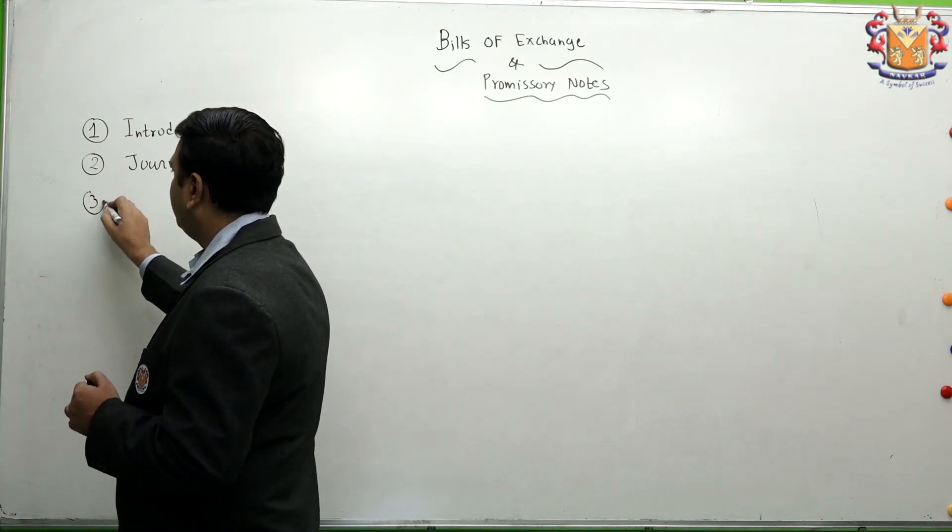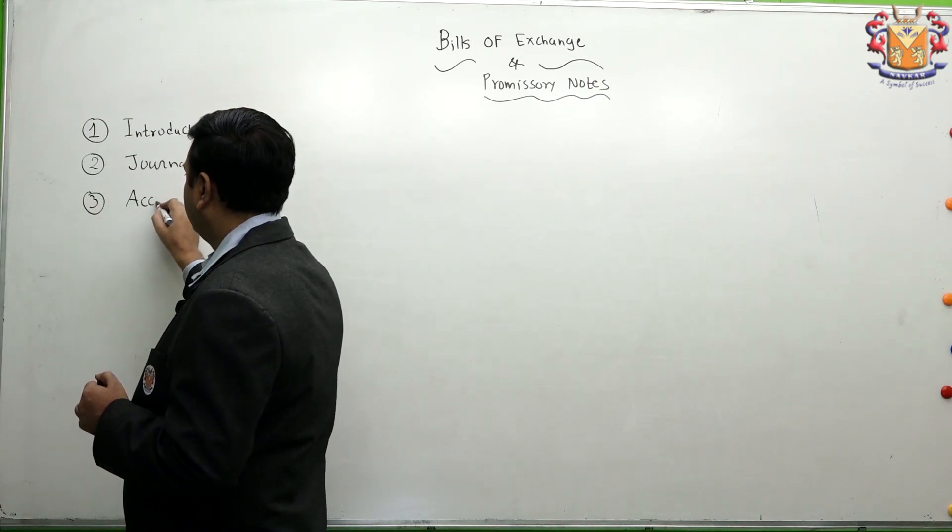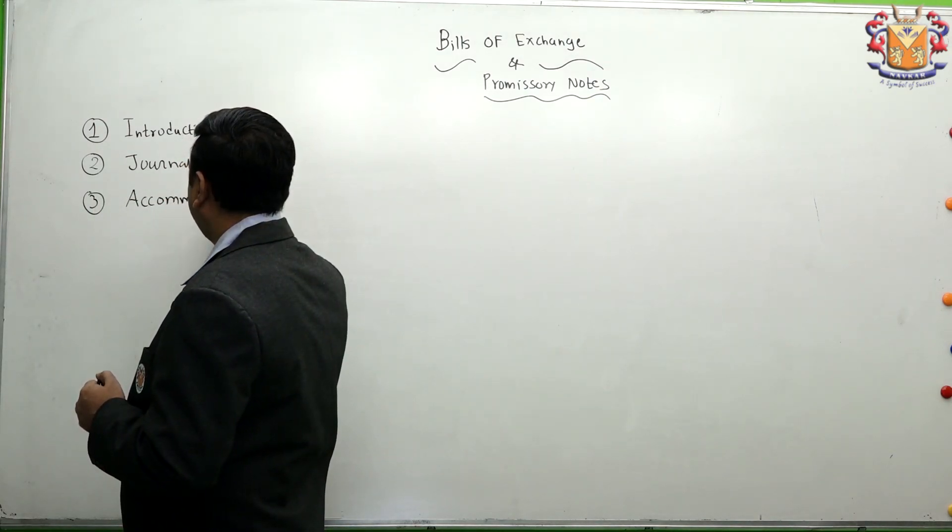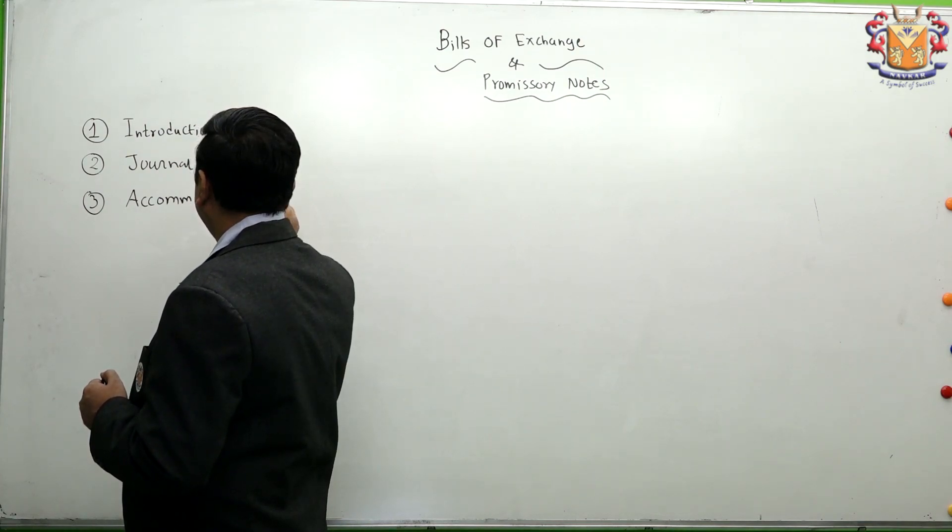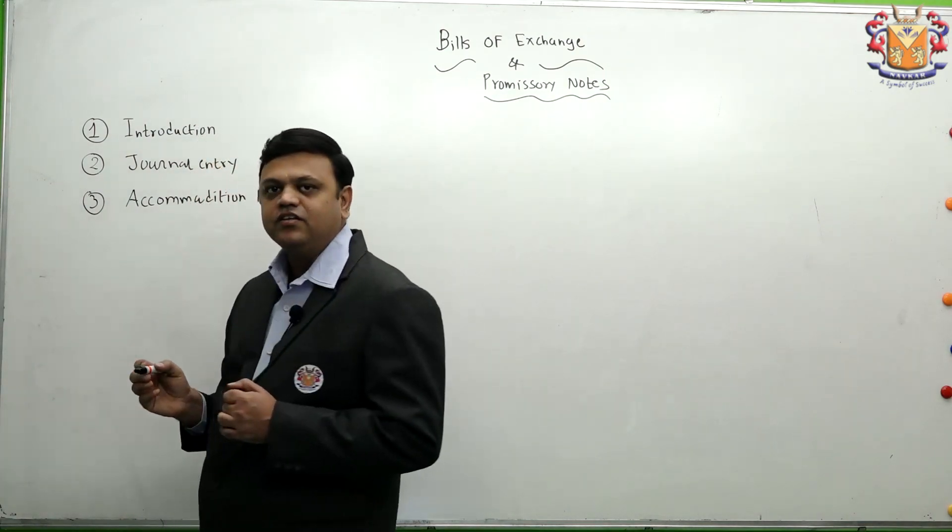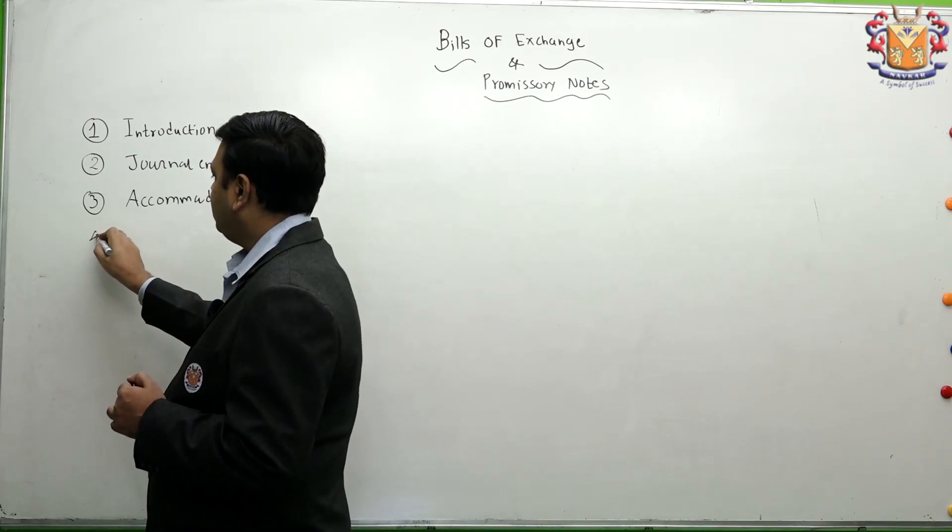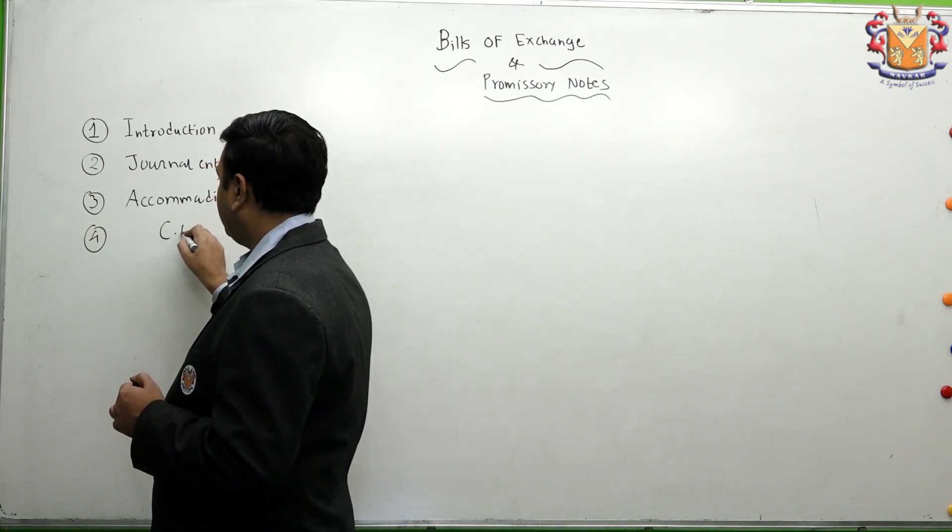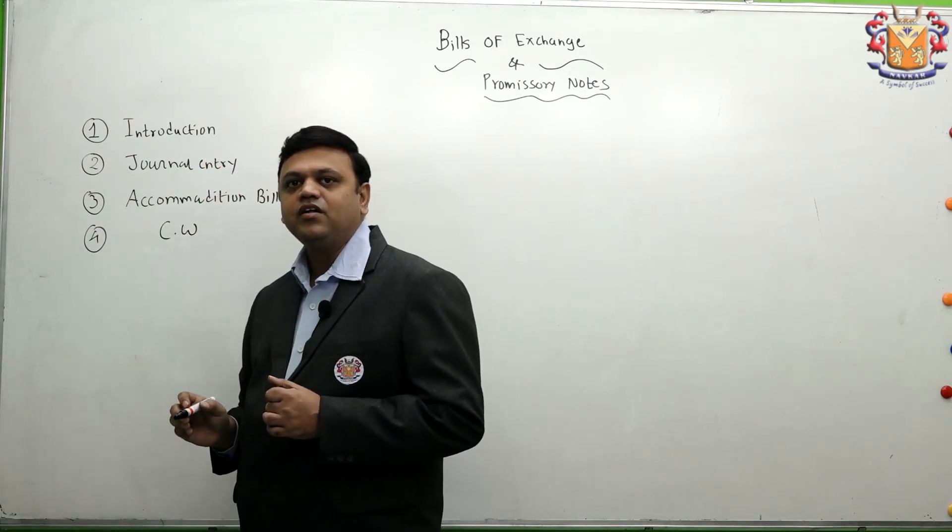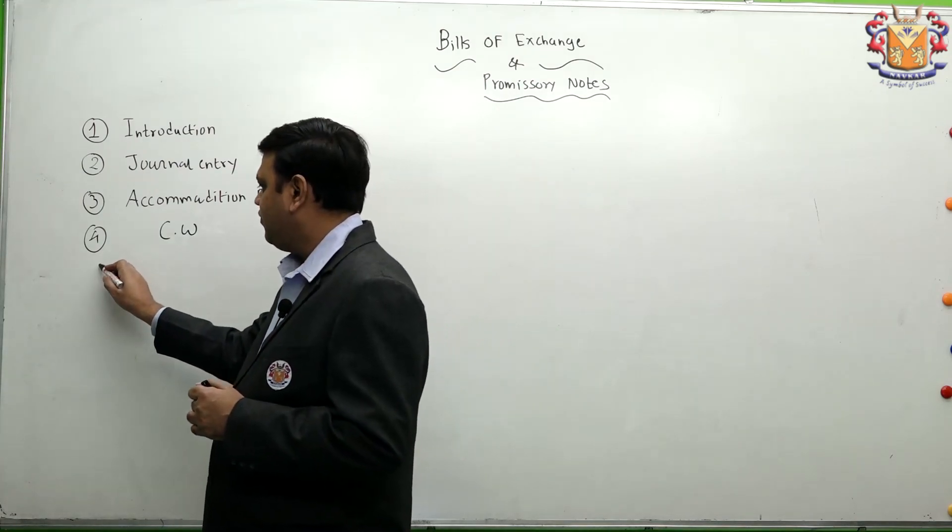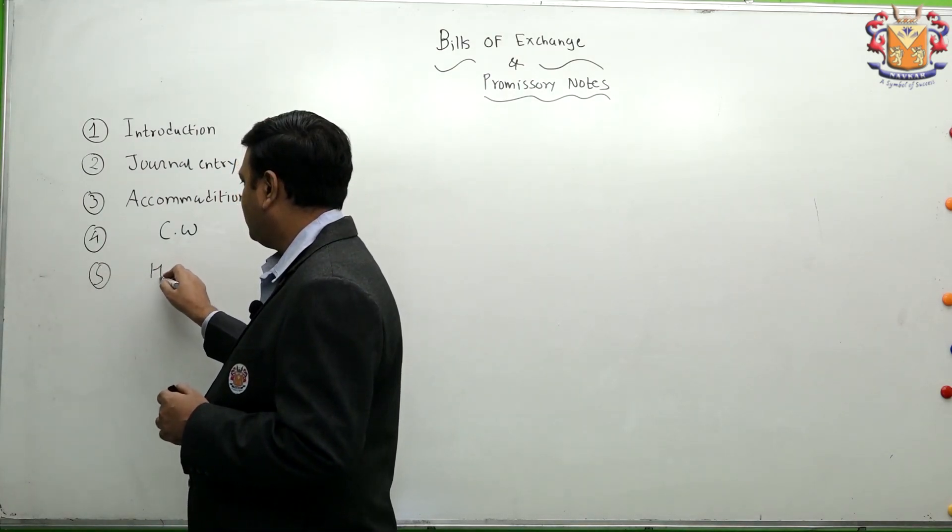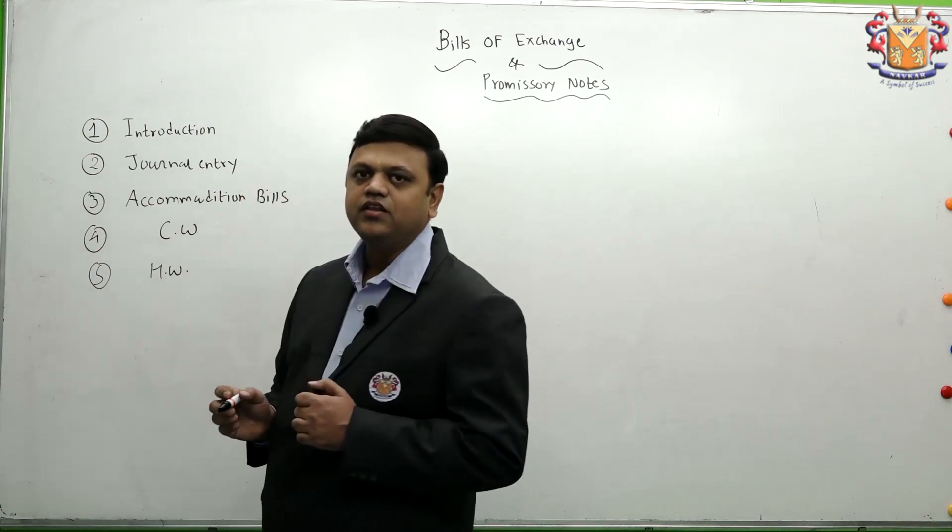The third part is accommodation bills, a very interesting topic that can give you the idea about how these bills can be used to generate short-term finance. The fourth part is classwork of this topic where we will understand the MCQs as well as long sums. And the fifth part is homework solution I will give you in this topic.